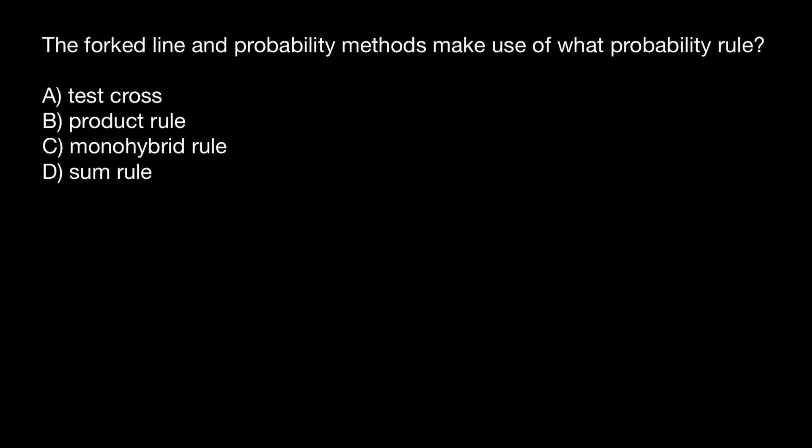The question is: what probability rule does the fork line method make use of? Here are the four answers to choose from. The first variant is test cross — but what is a test cross?